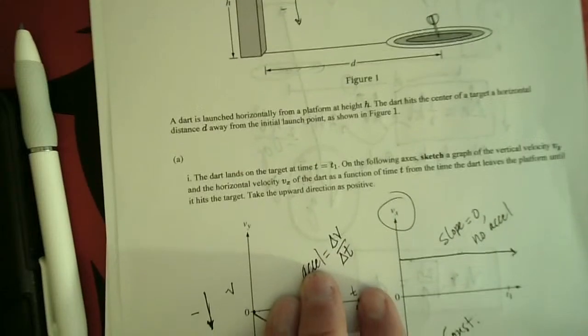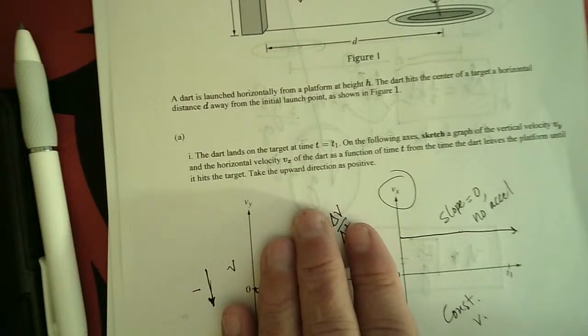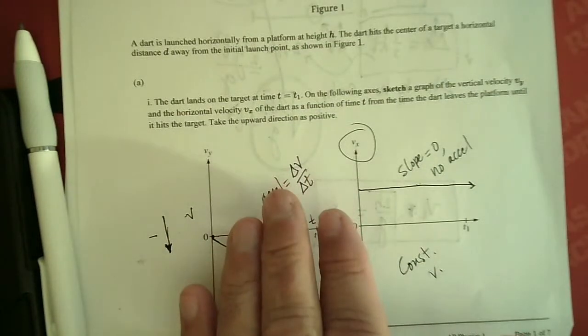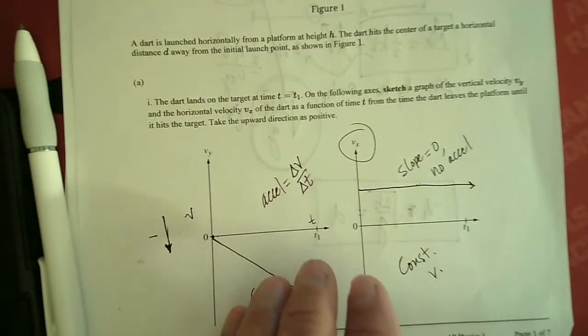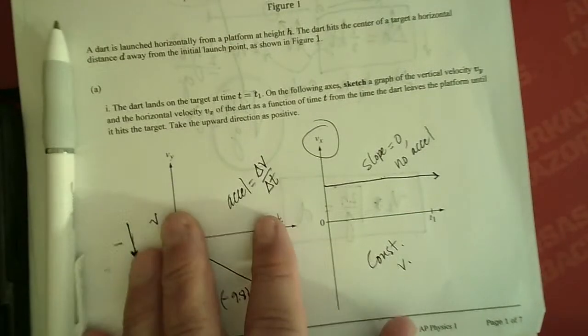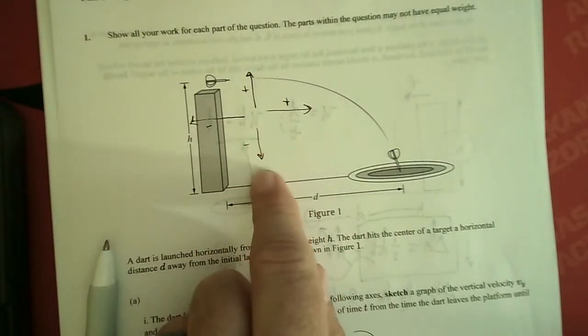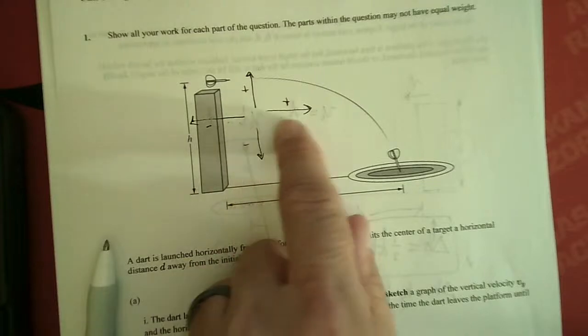The dart lands on the target at a time t. On the following axis, sketch a graph of the vertical velocity and the horizontal velocity of the dart as a function of time from the time the dart leaves the platform until it hits the target. Take the upward direction as positive, so we have done this up as positive, down as negative, left as negative, right as positive.